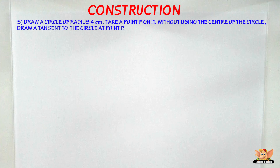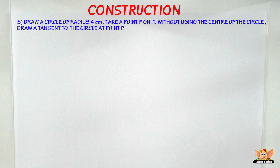We've got a question here: Draw a circle of radius 4 centimeters and take a point P on it. Without using the center of the circle, draw a tangent to the circle at point P. So let's do this now.